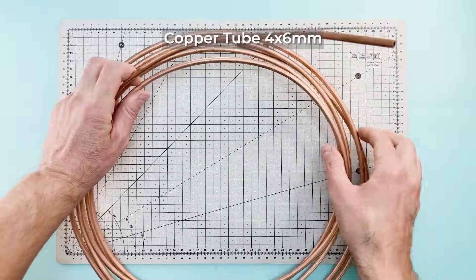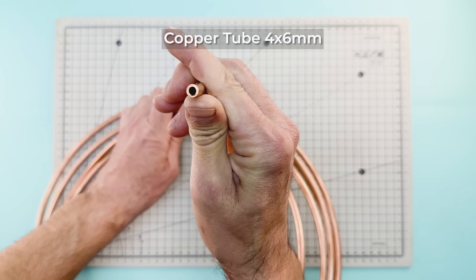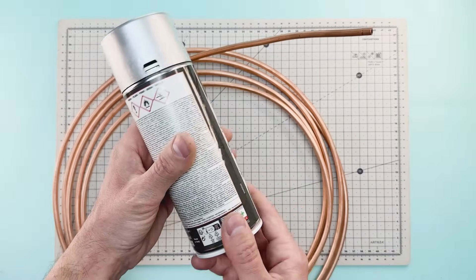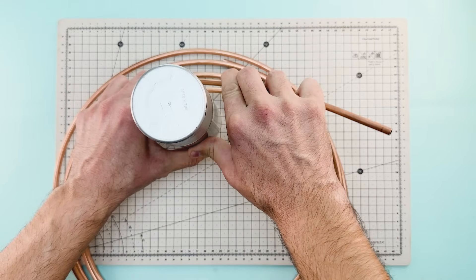To begin, we'll need a copper tube with a 4 x 6 mm diameter. Using something round like this paint can, we'll bend the copper into a spiral.